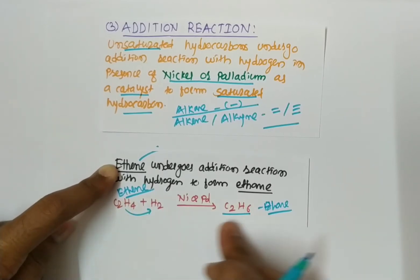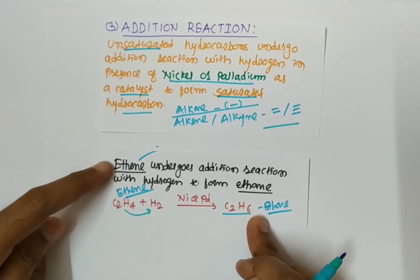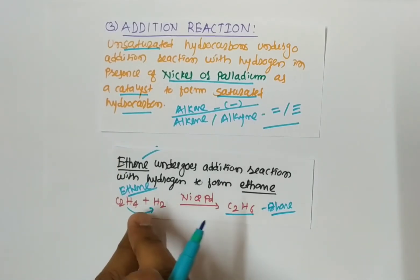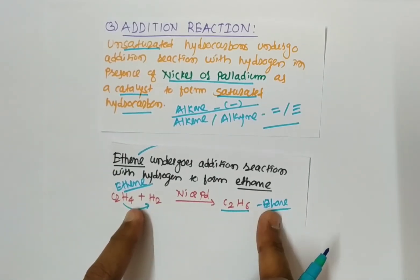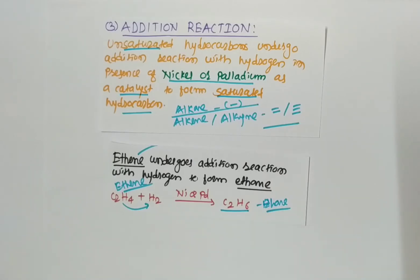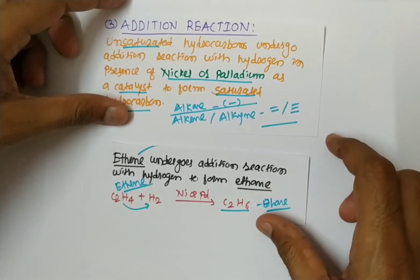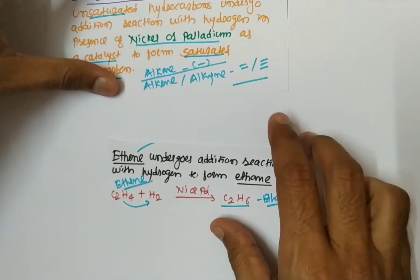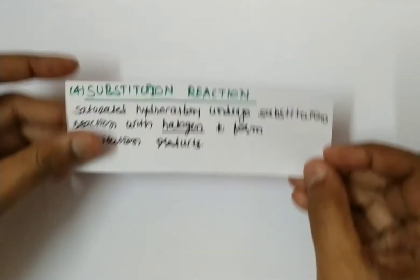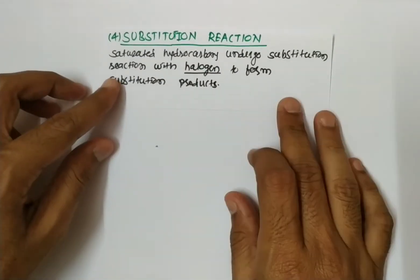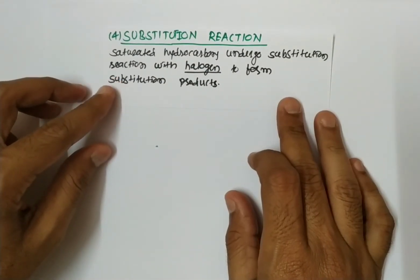So alkene converts to alkane — meaning unsaturated hydrocarbon converts to saturated hydrocarbon. This is the third property, that is the addition reaction. Now the last reaction is the substitution reaction.